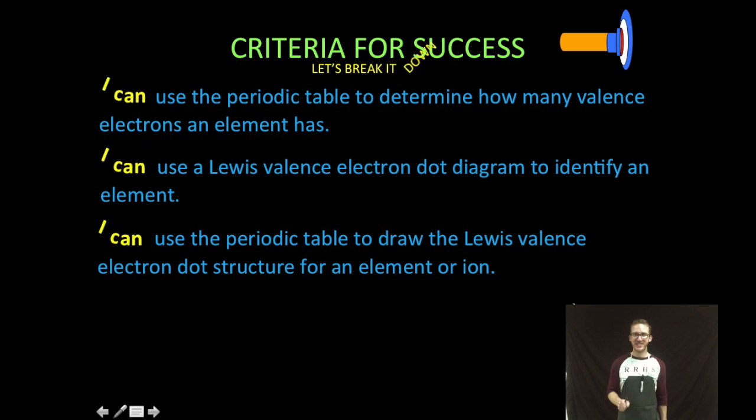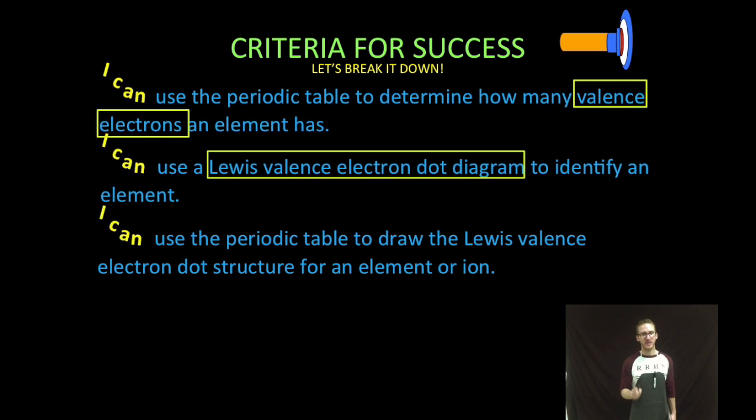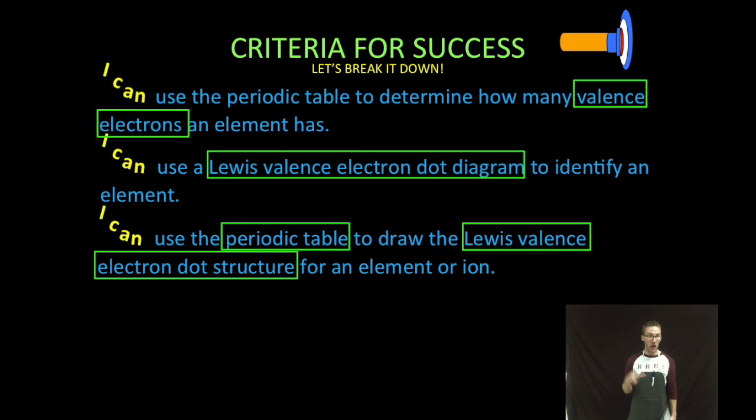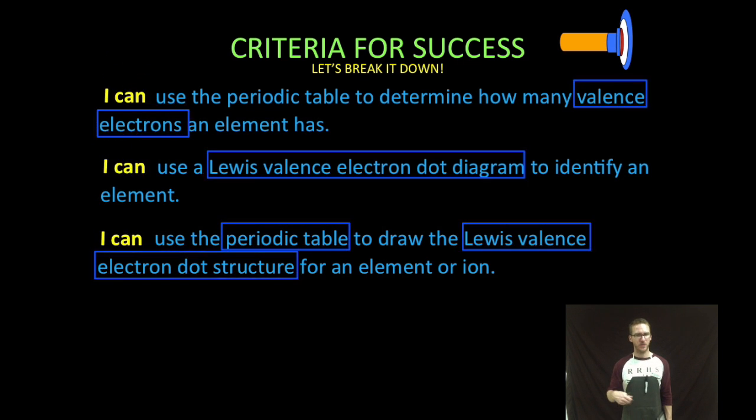Breaking it down, we're going to look at the periodic table to determine how many valence electrons an element has. Two, we are going to use a Lewis valence electron dot diagram to identify an element. And three, we're going to use the periodic table to draw the Lewis valence electron dot structure for an element or ion.